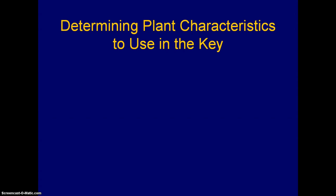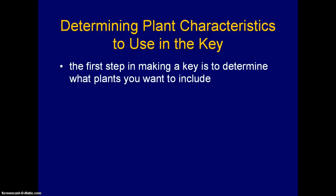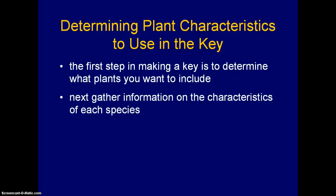If you want to make a plant key, you have to determine what characteristics you're going to use. But the first step, really, is to determine what plants you want to include. Do you want to include a broad range of plants, such as all deciduous trees or all coniferous trees? Or do you want a more specific key dealing with, say, members of a family like the rose family? There is no particular key you have to make — it's up to the builder of the key what plants they want to include.